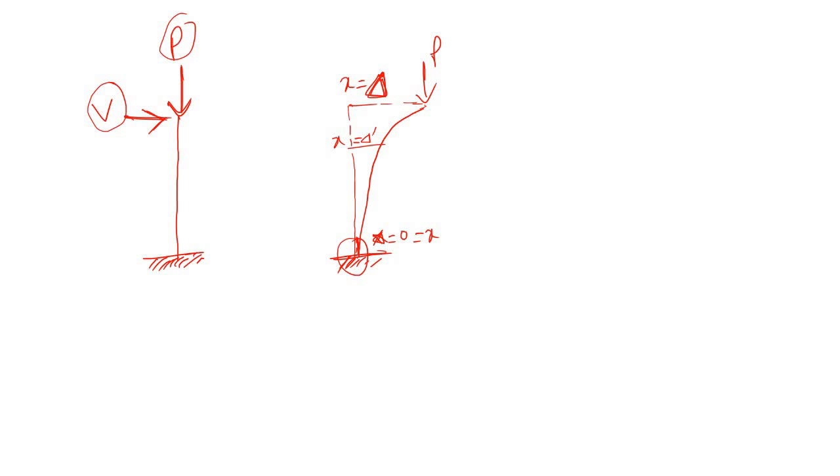This is zero and here x is equal to delta dash. And now the load is acting here. So first try to draw the stress diagram due to your lateral load and axial load. Axial load, this is simple, this is constant, this remains constant. Let's say this is P by A diagram throughout the length. Let's say this is the total length.